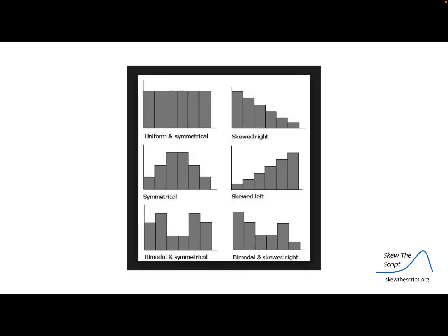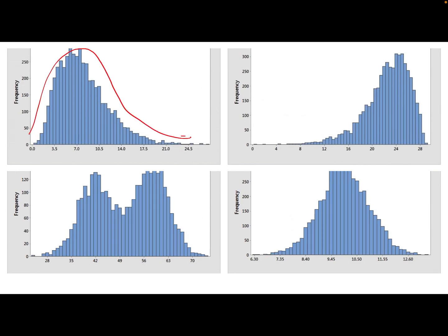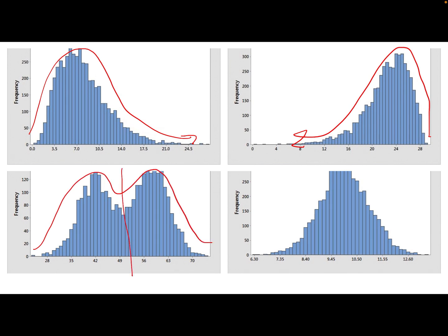Here are some common distribution examples. Uniform and symmetrical is when there's no variation — all values are the same. We have skewed right, skewed left, symmetrical and unimodal, bimodal and symmetrical because there are two peaks and it's even on both sides, bimodal with two distinct peaks where it goes up, down, and back up again — and this one is skewed right. Additional examples include skewed right, skewed left, bimodal and symmetrical, and symmetrical.